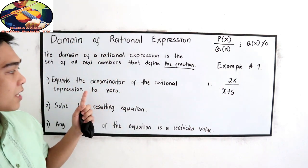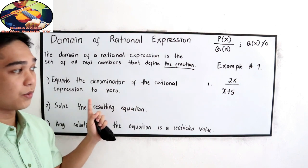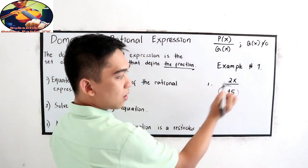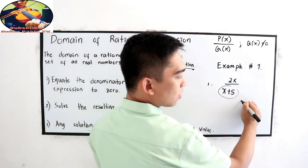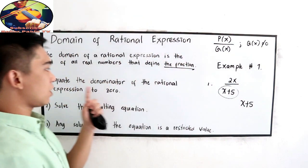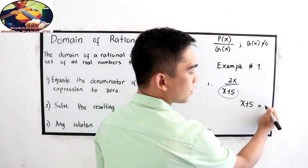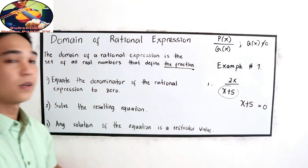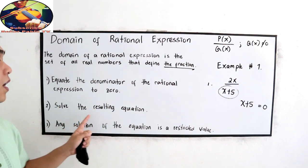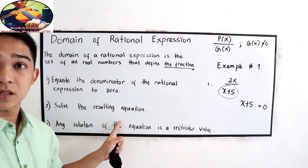The first step is to equate the denominator of the rational expression to zero. The denominator is X plus 5, so we set X plus 5 equal to zero. Next, solve the resulting equation — we are going to find the value of X.